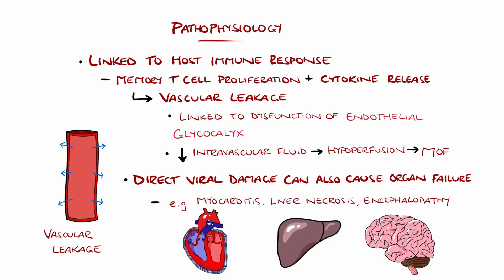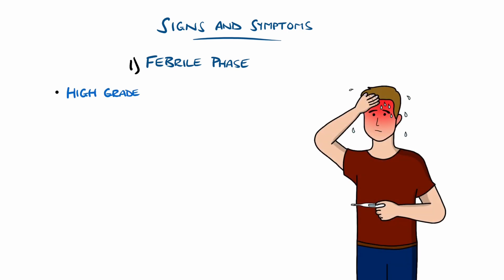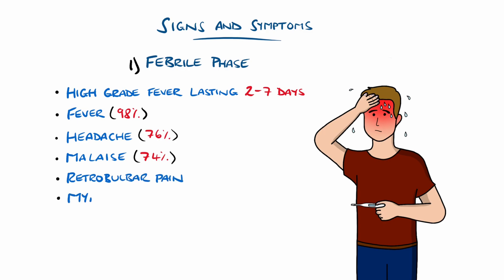Dengue has three distinct phases. The first is the febrile phase, characterized by a high-grade fever lasting typically 2–7 days; fever is seen in 98% of cases. Other manifestations include headaches in 76%, malaise in 74%, retrobulbar pain — meaning pain behind the eyes — and myalgia, which can be very severe. This is where dengue got the name 'break bone fever', as the aches can be so severe they resemble bones breaking.